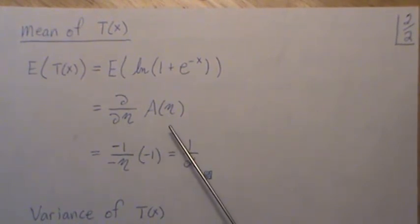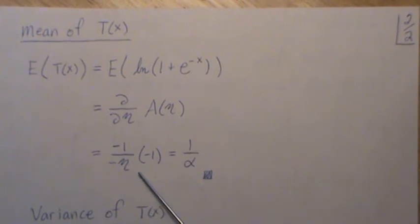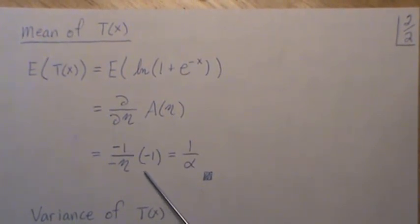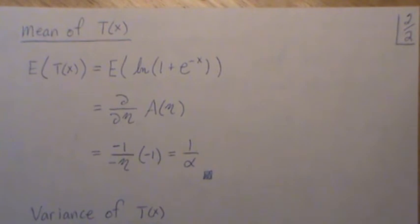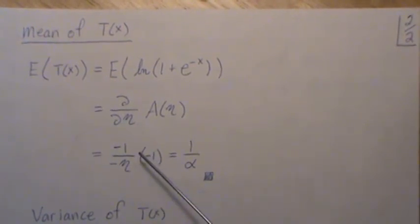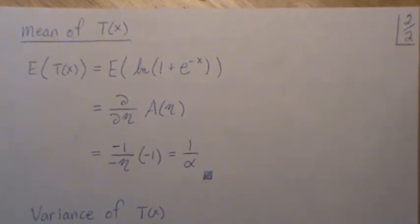In theory, it says it's the first derivative of the log partition. And then when you take the derivative, you get this. And eta is minus alpha. So we put that in and everything cancels and we get 1 over alpha.